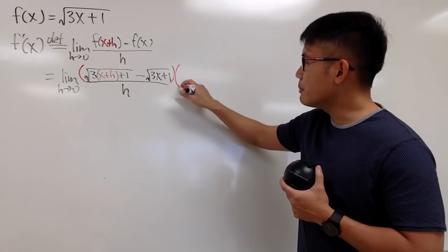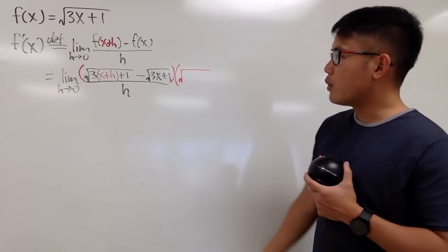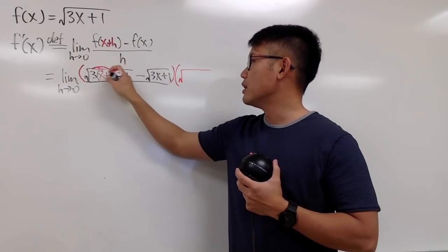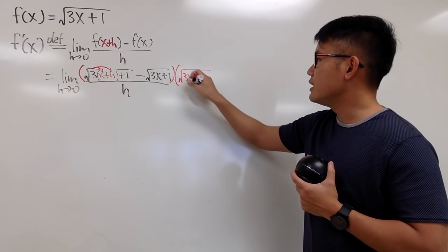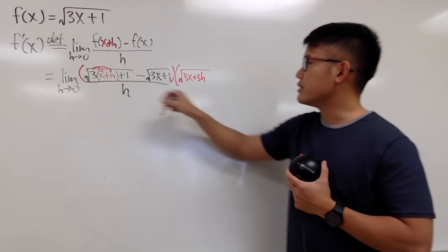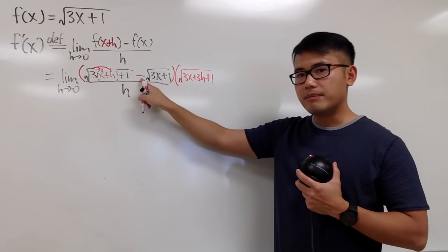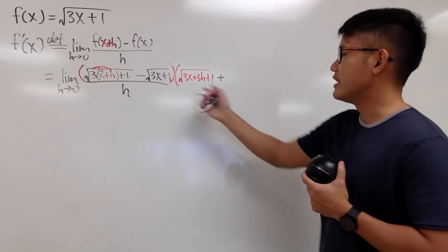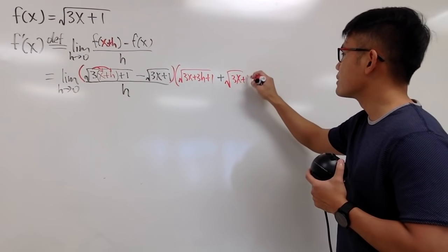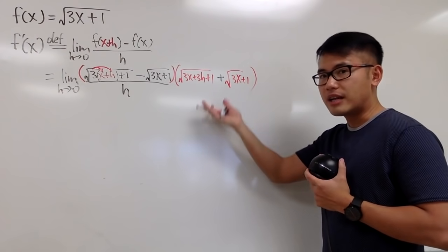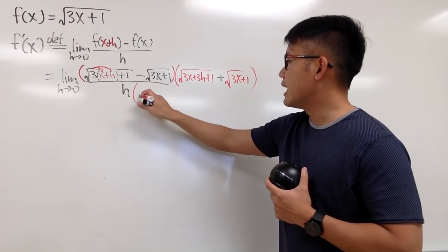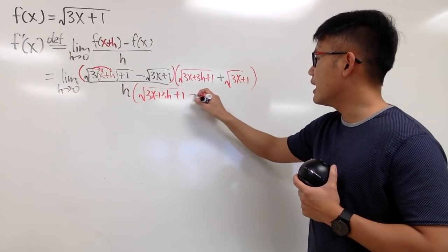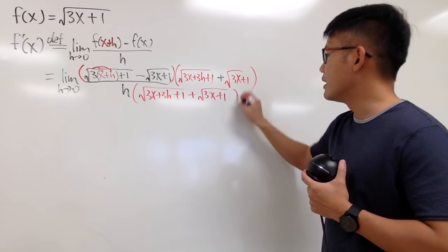Let me multiply by the conjugate. Notice that we have the 3 in front of the parentheses — we should multiply this in. So I'll write it as 3x plus 3h. Then you still have the plus 1. And instead of minus, you have a plus for the conjugate. Then this stays the same again: 3x plus 3h plus 1, plus square root of 3x plus 1.